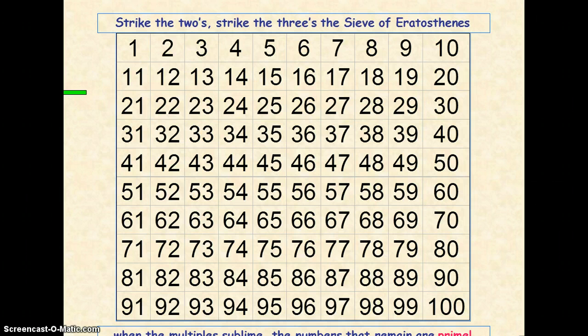It's just a quick tutorial on how to find the prime numbers between 1 and 100. If we just display a 1 to 100 grid, what we're going to do is use the sieve method to create a way of finding all the prime numbers from 1 to 100.